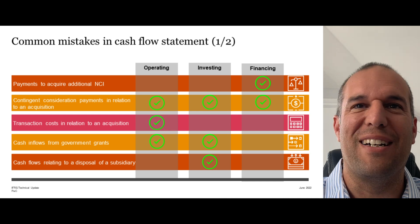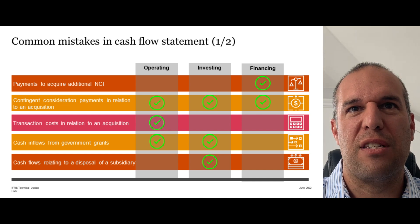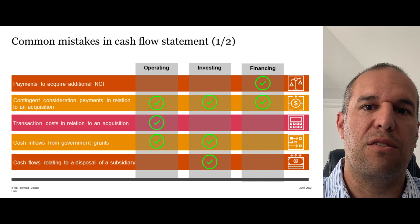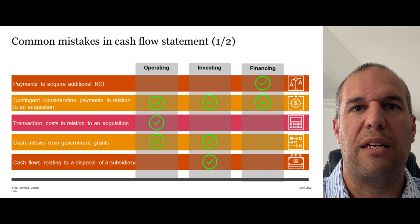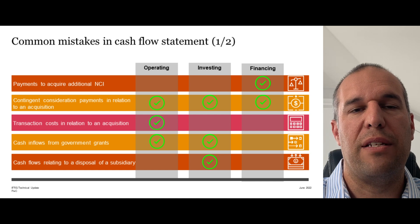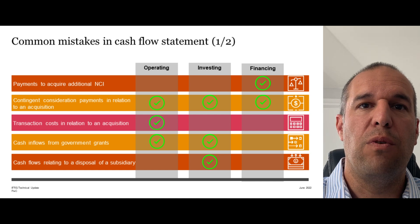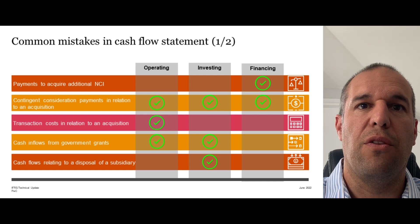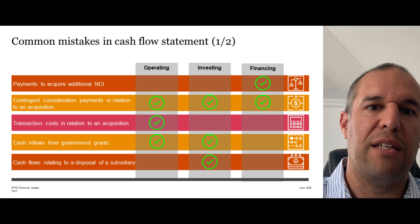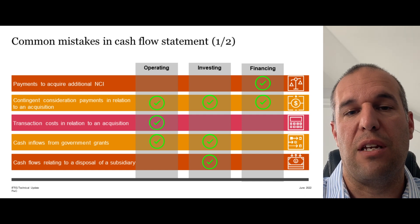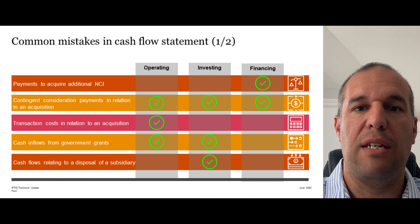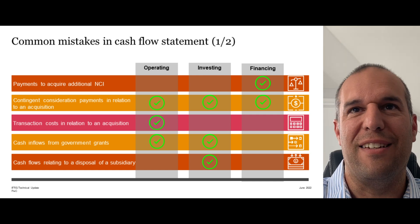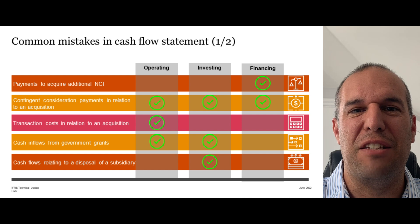Cash inflows from government grants could be operating or investing depending on the nature of the grant and what it's intended to compensate the entity for, so understanding the nature of that grant is important. Cash flows relating to the disposal of a subsidiary are classified as investing, and importantly that is the aggregate or net cash flows — the cash inflow you receive minus the cash that was in the subsidiary that you lose. The net amount needs to be recognized as a net investing activity.